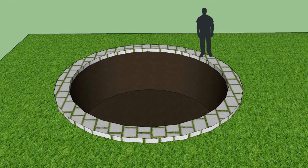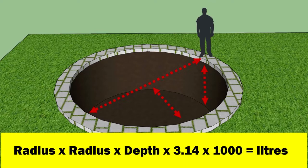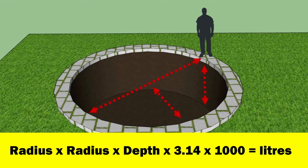The next easiest pond to calculate is a circular pond with no shelves and a flat bottom. To calculate the volume of this pond, we need to measure the diameter and the depth of the pond. For the calculation, we need the radius of the pond, so we divide the diameter by 2. We then multiply everything together. Radius times radius times depth times 3.14 times 1000 gives us the liters.